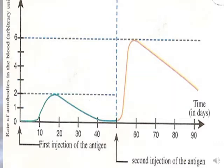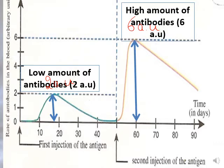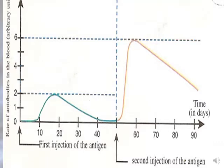Regarding the amount of antibodies: in the primary immune response, the amount is low — about 2 AU. In the secondary immune response, the amount is much higher — reaching about 6 AU. So the primary response produces a low amount of antibodies, while the secondary response produces a high amount.